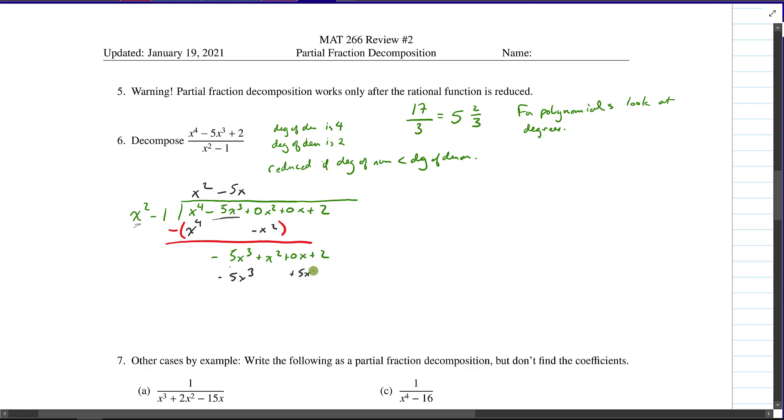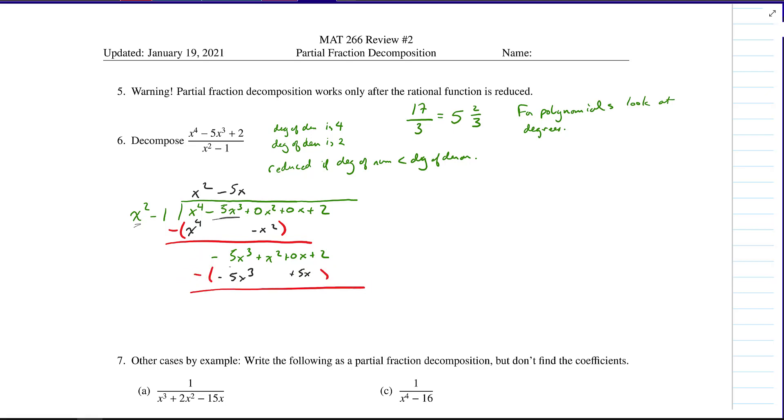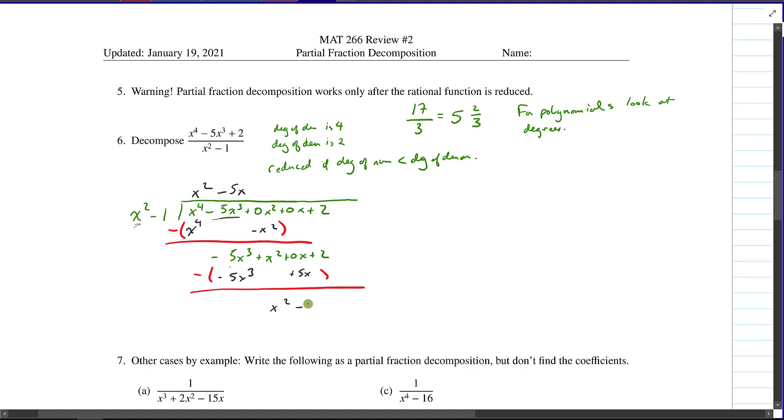And then don't forget this part. This is where you can get into trouble. Don't forget to subtract this down. And when you do so, we end up with x squared minus 5x plus 2. Notice that the degree of the numerator is, or the degree of this term right here, is the same as the degree of this term. So I continue performing the long division.